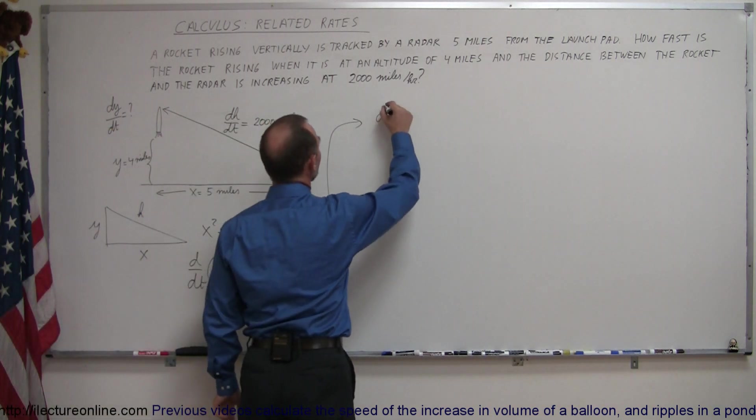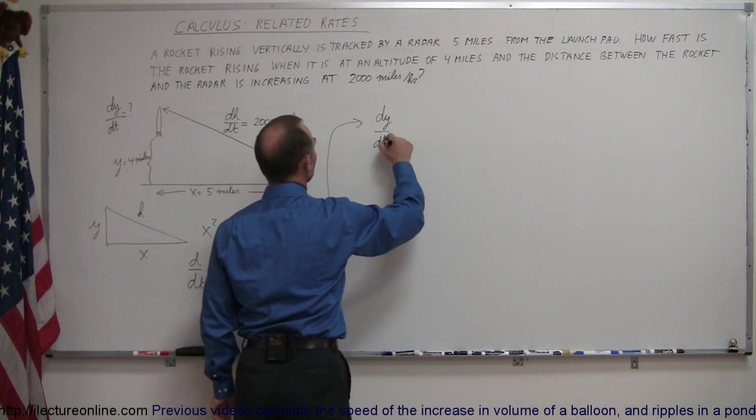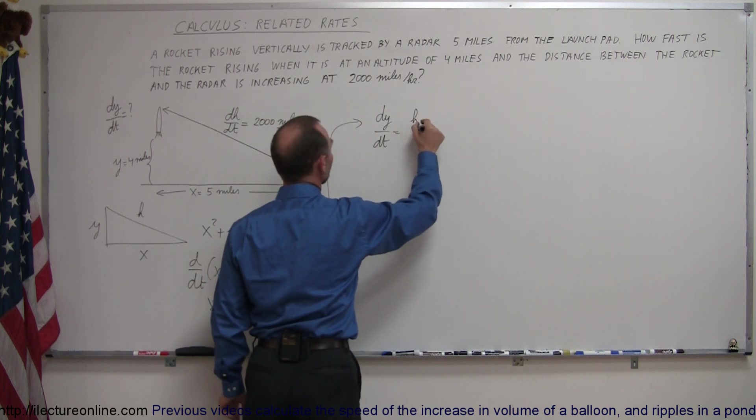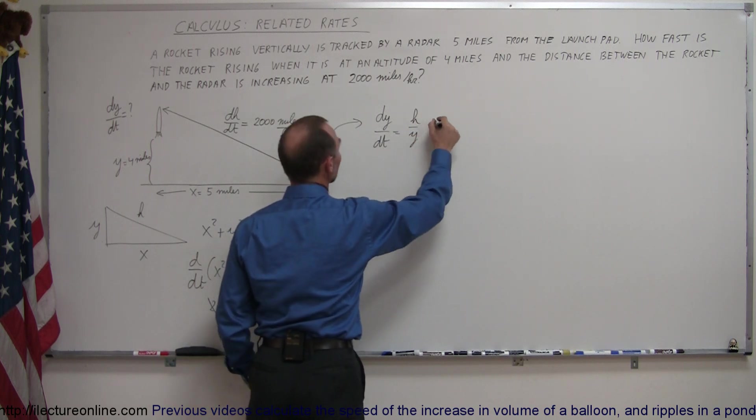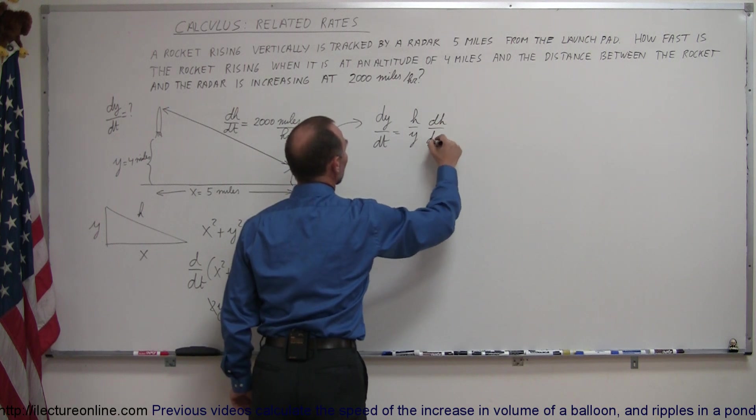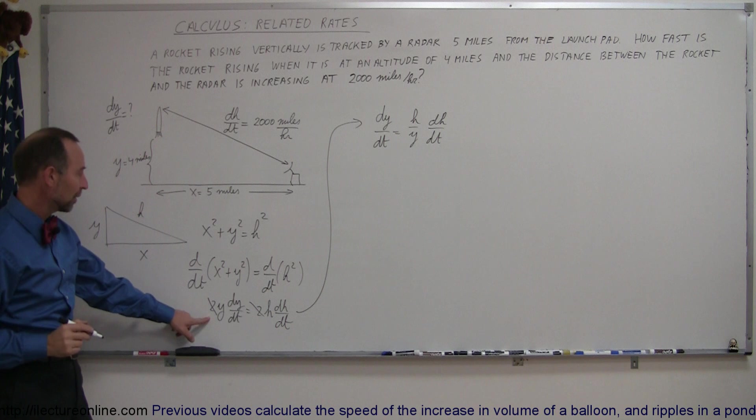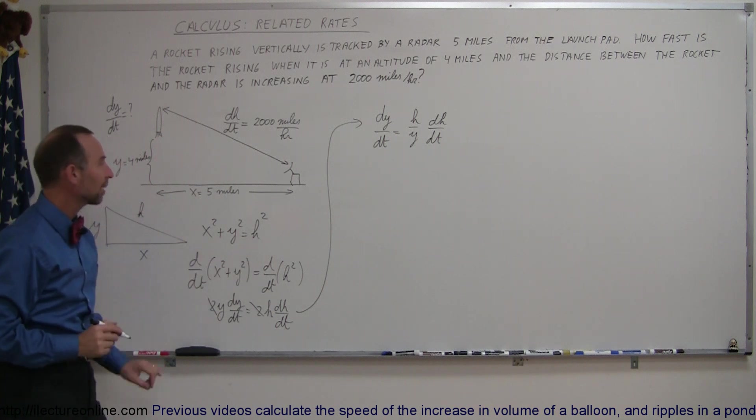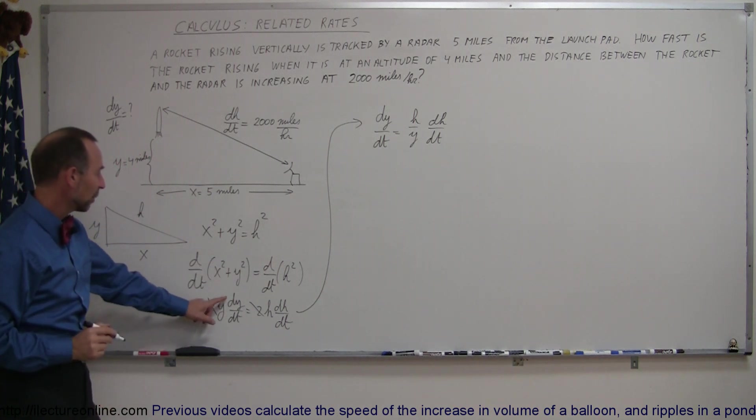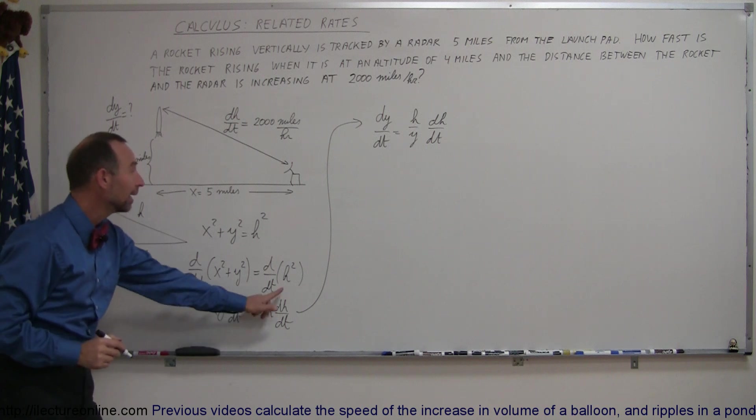I can say that dy dt is equal to h over y dh dt. Let me get out of the way here so you can see how that's done, right? So we took our equation here that we got from taking derivative with respect to time on both sides of the equation. We end up with dy dt is h over y dh dt.